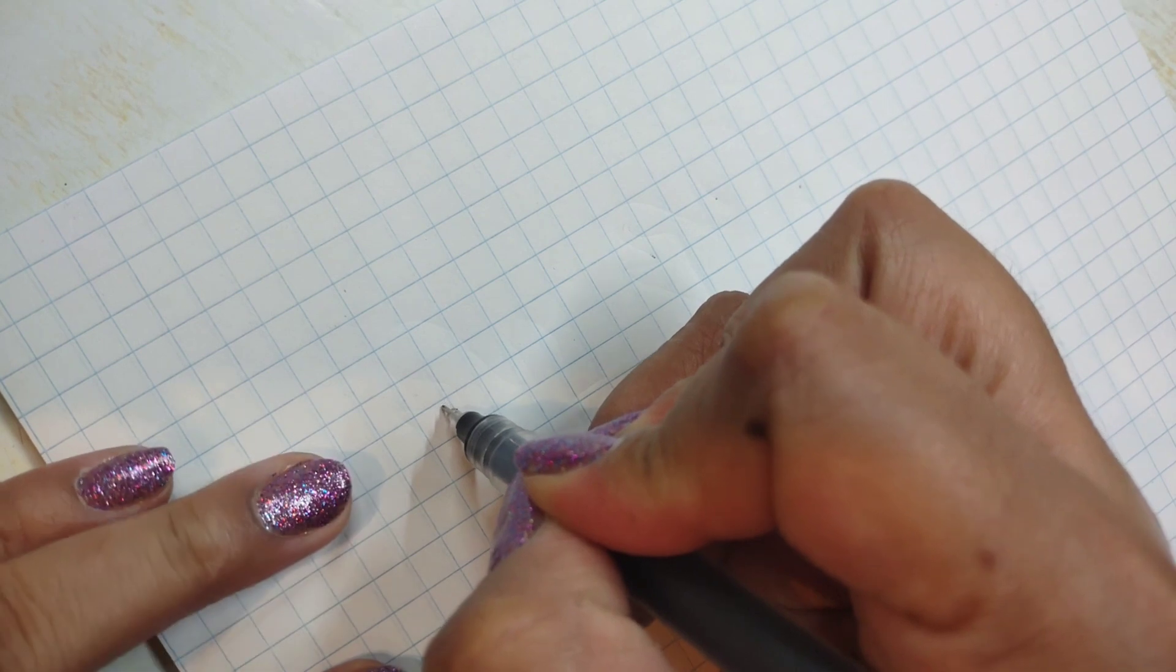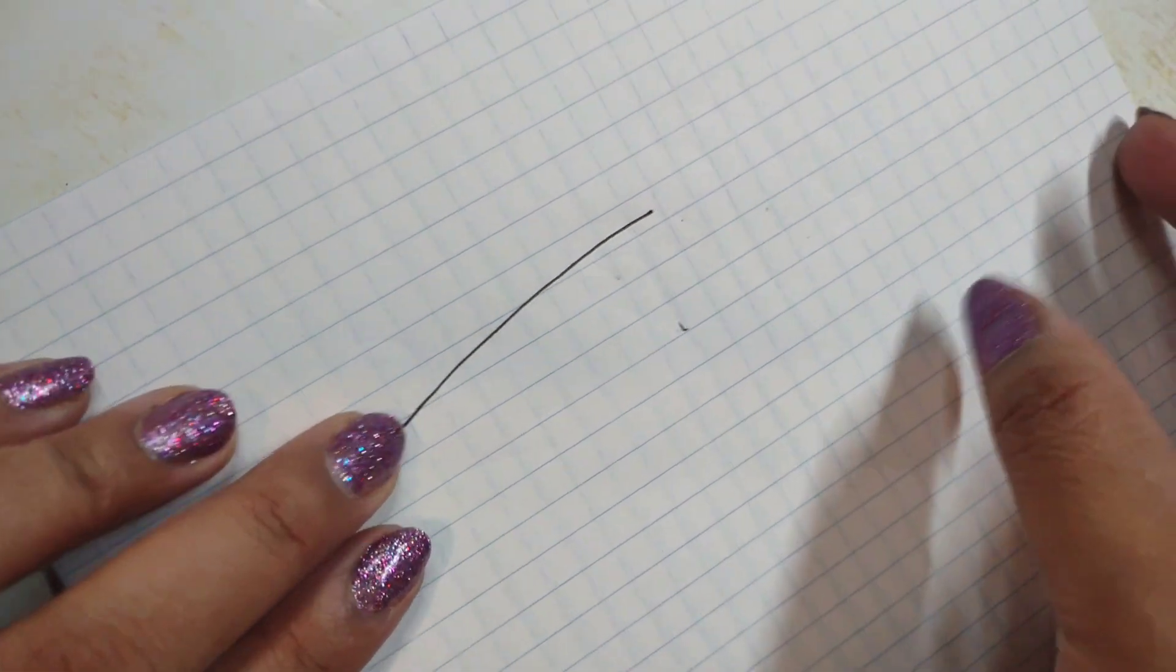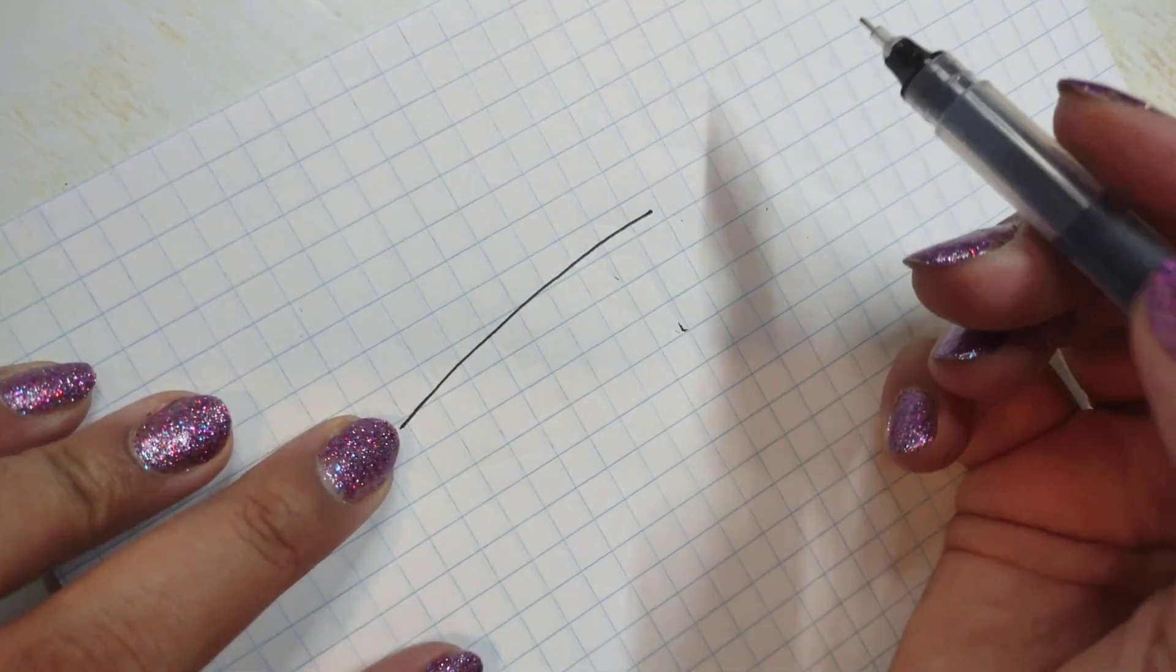And so when we get started, the very first thing that we're going to create is just that center line. So it's really just a stem. It's the very center where all those little veins of the leaf come out from.